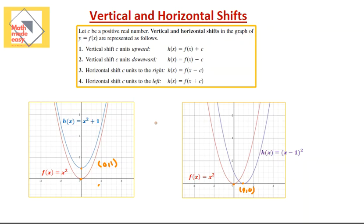Now that we've taken that in consideration, let's look at the rule. The rule says: let c be a positive real number. For vertical and horizontal shifts in the graph of y equals f of x — vertical shift c units upwards: h of x equals f of x plus c. As you can see, f of x here was x squared, so x squared plus c, which is x squared plus 1. Writing that in function notation: h of x equals f of x plus 1. So from the function notation, h of x is a transformation of f of x by a vertical shift — moved upwards one unit.